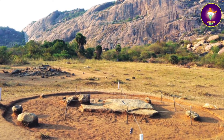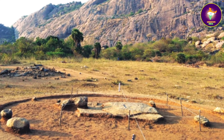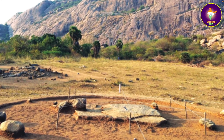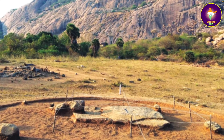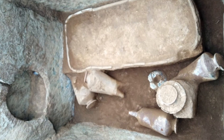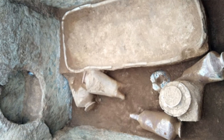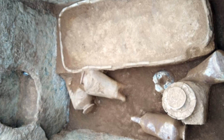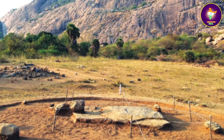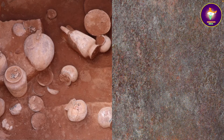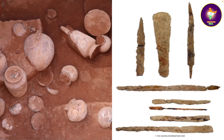Most of the burials are cairn circles, which are piles of stones on the boundary of burial sites. In a few of them, the cist — the ancient stone or terracotta coffin — is partially exposed due to removal of the cairn packing by cultivators of the field. In total, 16 graves were opened. Pottery was found both inside the cist and outside in the cairn circle. Iron objects such as small knives, swords, axes, arrowheads, etc. were also found.